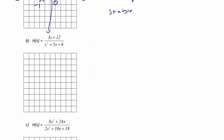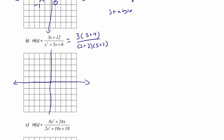Second example: H(s) = (3s + 12)/(s² + 5s + 6) = 3(s+4)/[(s+2)(s+3)]. The zeros don't affect stability or response type. We have poles at −2 and −3 — two distinct real roots in the open left half plane — so this is a stable, overdamped system.